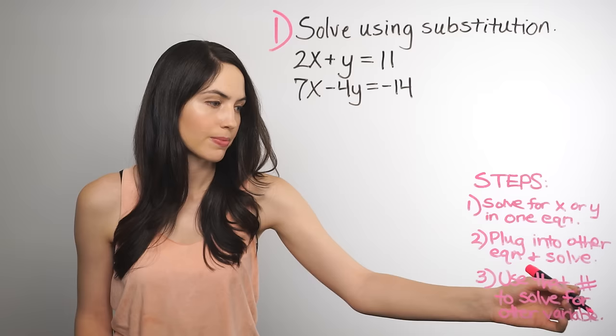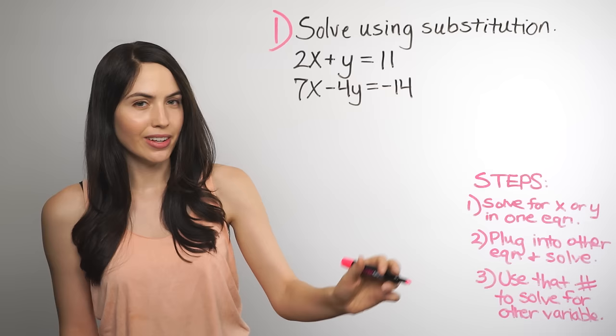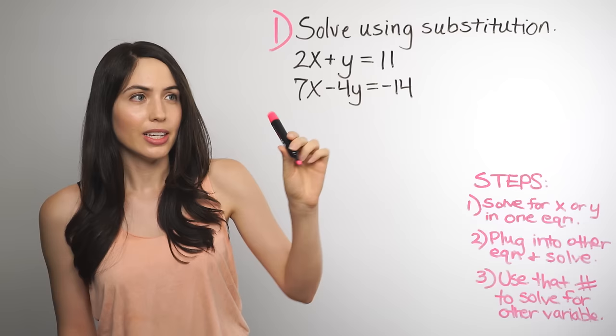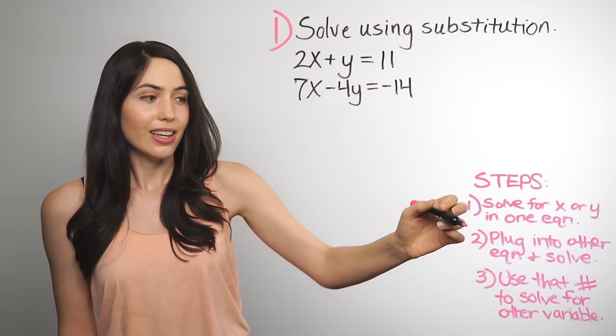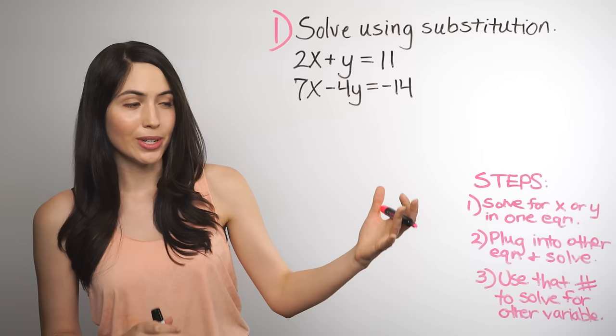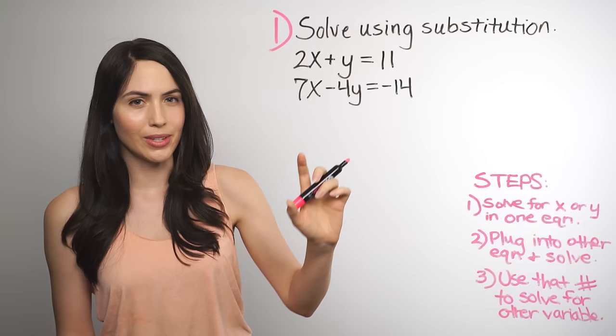These are the three steps you can always use for substitution. The first thing is to solve for y or x in either equation — get x alone or y alone in one of the equations, whichever one's easier. Then take that and plug it into the other equation that you haven't used yet, and solve. The last step is use whatever number you just got to find the other variable. So if you already solved for x, you use that to solve for y, and vice versa.